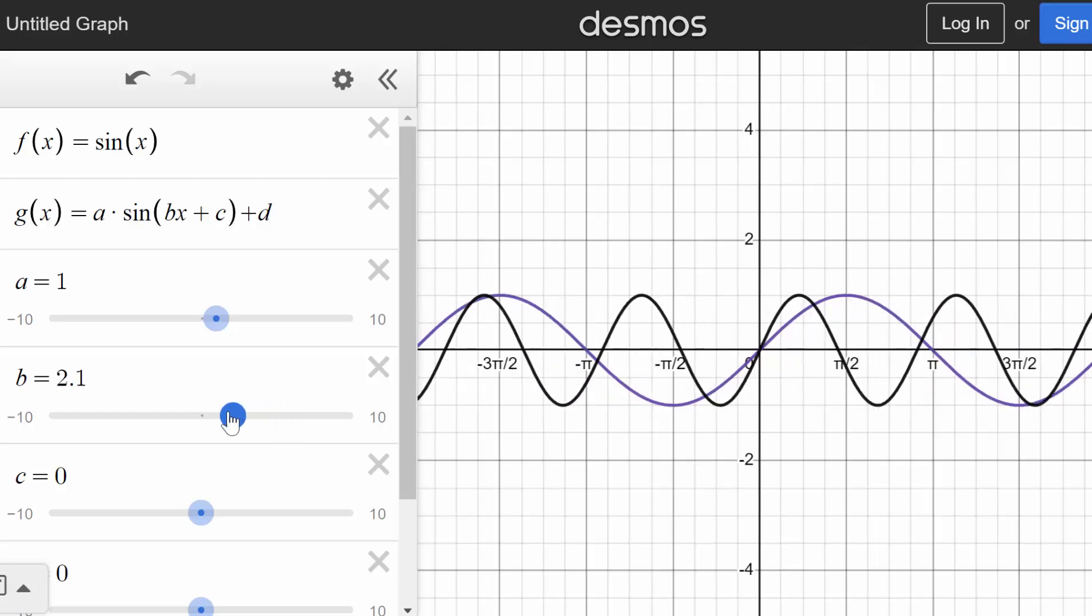So if b is a fraction, we can see it actually stretches it out, makes it much wider, much longer period. But if b is negative, it will cause a reflection about this y-axis here.